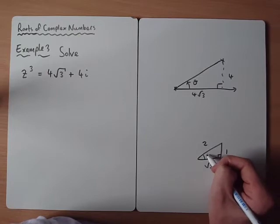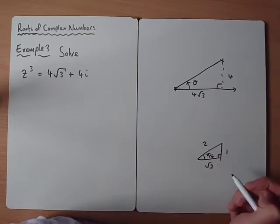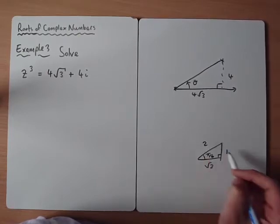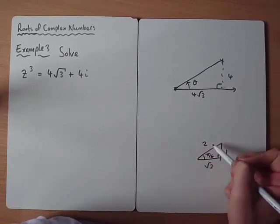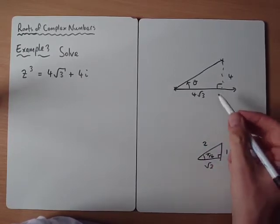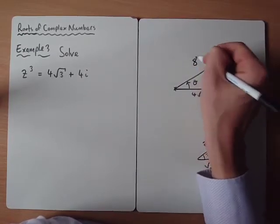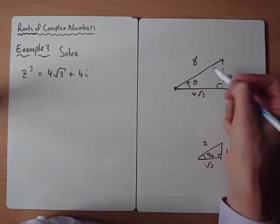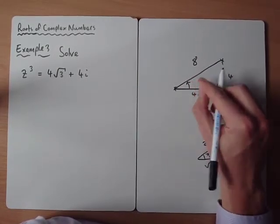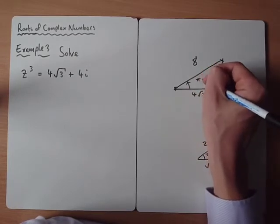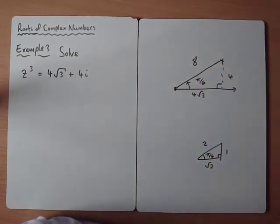So we've got a similar triangle to this. So that would be 8. But I mean, just use Pythagoras if you're not sure. That would be 8. And that angle there would be π over 6.